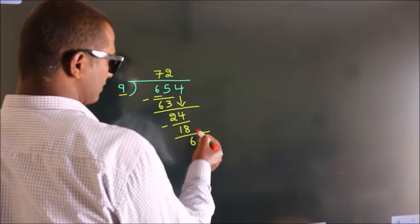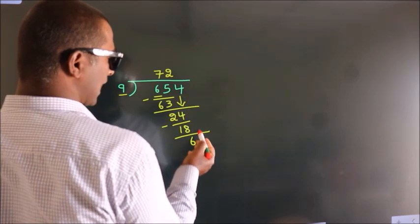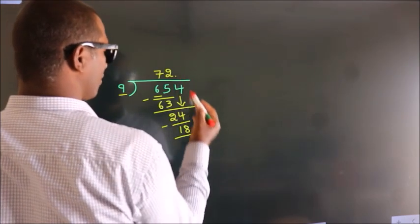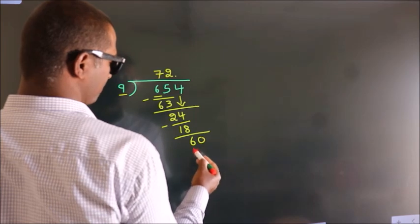After this, no more numbers to bring it down. So what we do is, we put a dot and take 0. So 60.